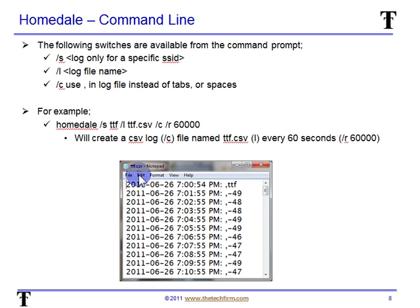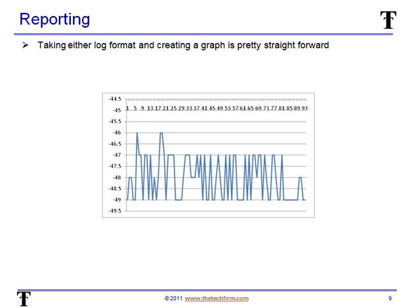When you're done, you end up with a file that looks like that. Now that you have everything in a CSV log, it's pretty simple to drag it into Excel and do a graph fairly easily. There are tons of graphing utilities out there as well. Now you can do a graph your way — overlay other graphs or other SSIDs, make it look as pretty as you like and customize it as much as you like.